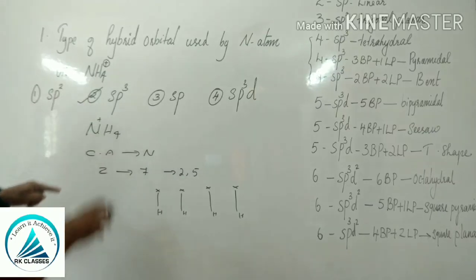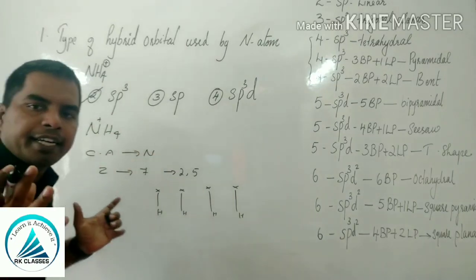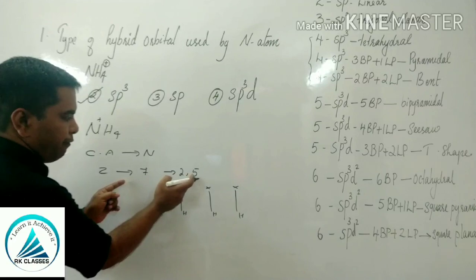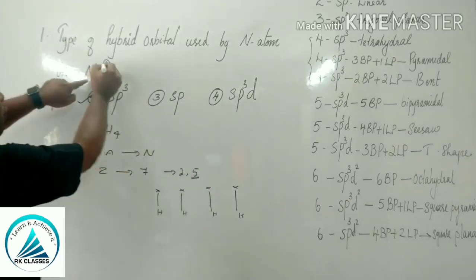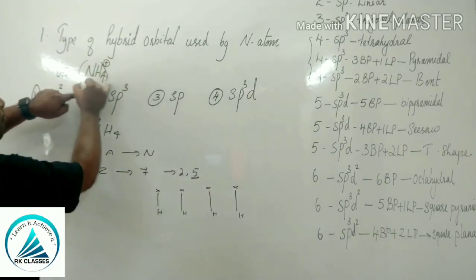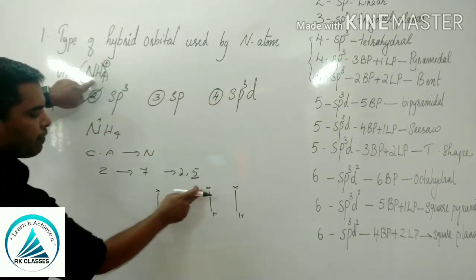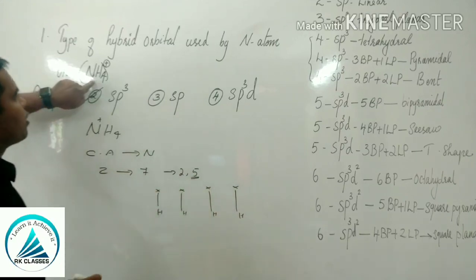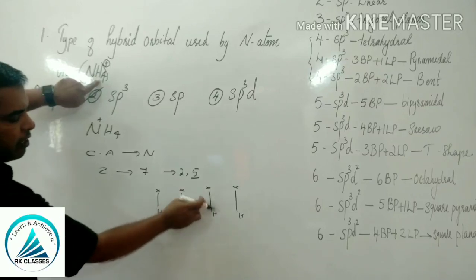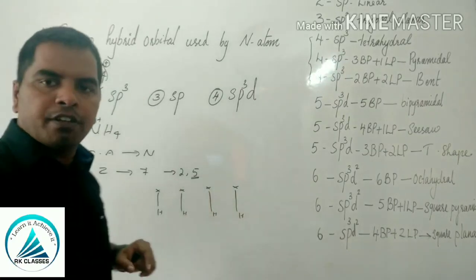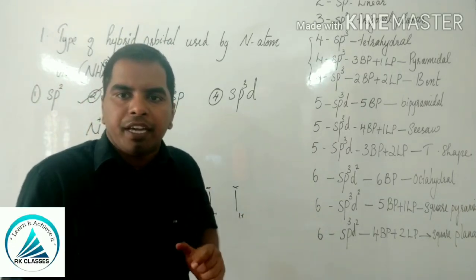We analyze the central atom nitrogen — atomic number 7, electronic configuration 2,5 — so 5 electrons in the valence shell. In NH4 plus, the positive charge means nitrogen loses one electron, leaving 4 electrons. All 4 are used to bond with the 4 hydrogen atoms — 4 bond pairs — so hybridization is sp3.